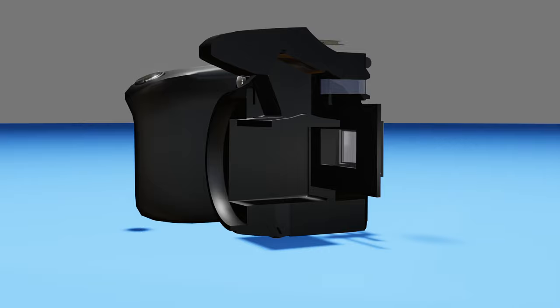Once the sensor has been exposed for the desired time, the top curtain closes over the sensor, blocking out light once again. The duration that the sensor is exposed to light is referred to as the shutter speed.